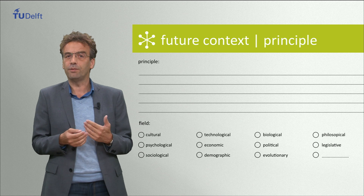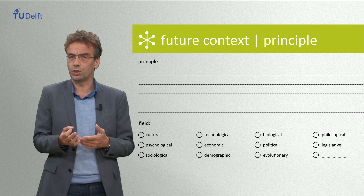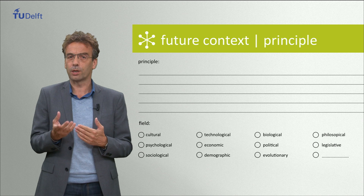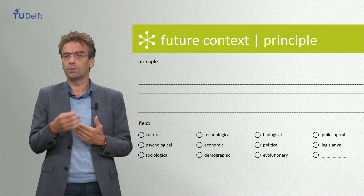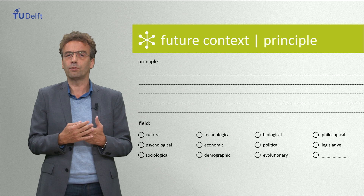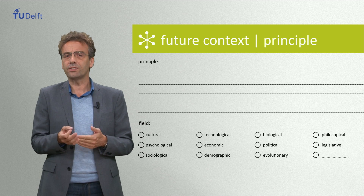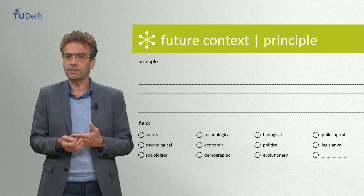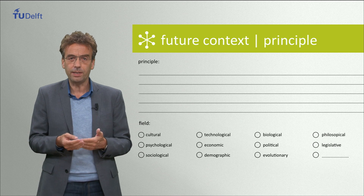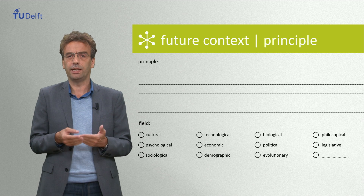When the factors are mainly found in technology, we speak of a technology push. When the factors are foremost based on market research — research on what people like and do — we speak of a market pull. In the human-centered design process that we advocate, however, the factors stem primarily from understanding people and the world they live in.